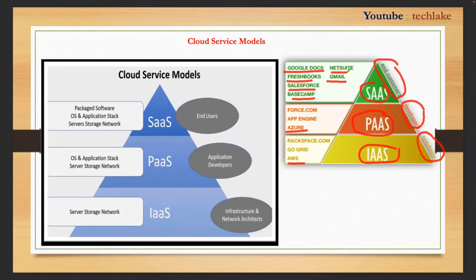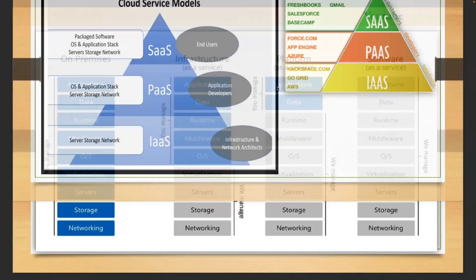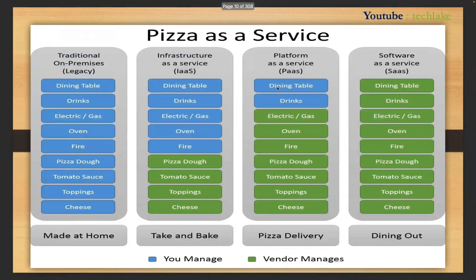SharePoint, Office 365, and Microsoft Teams are also Software as a Service examples. Earlier we used to store emails and documents in local systems, but now everything is in the cloud. If you use Office 365 or Teams, everything including documents and apps is stored in the cloud. That covers the service models.